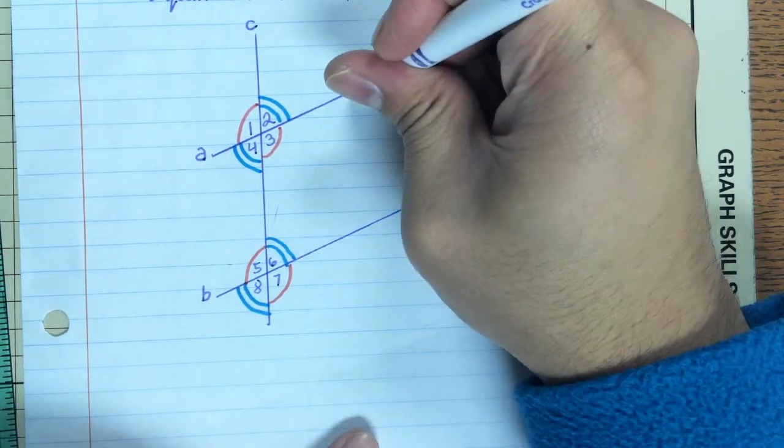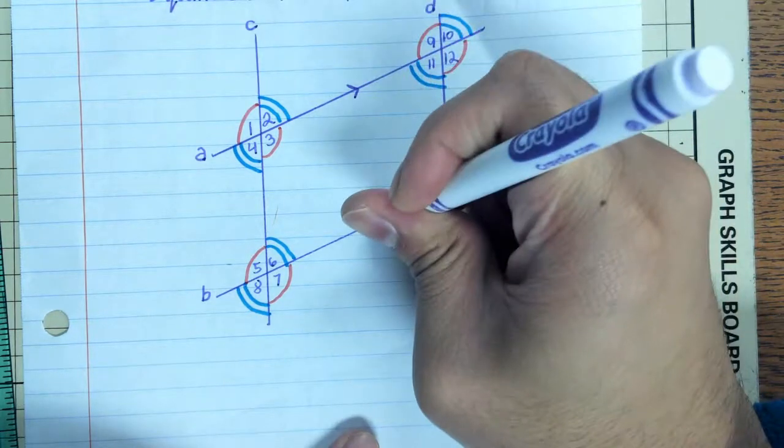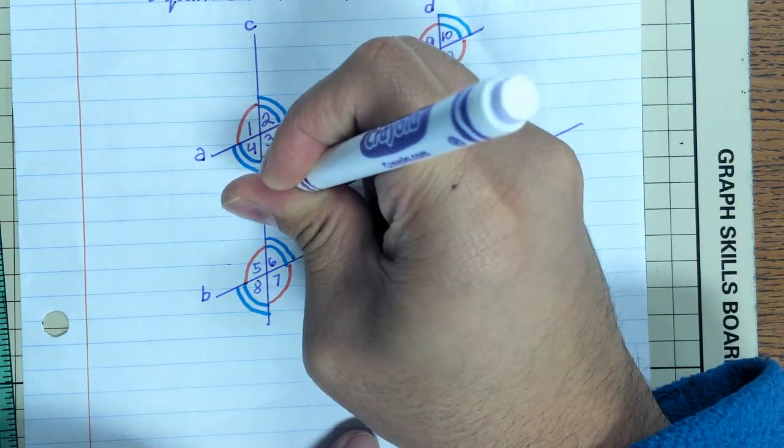And real quick, these are supposed to be parallel lines, so we indicate parallel lines with these arrows.